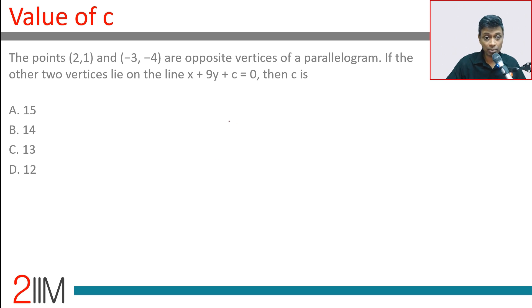The points 2 comma 1 and minus 3 comma minus 4 are opposite vertices of a parallelogram. If the other two vertices lie on the line x plus 9y plus c equal to 0, let's solve this.